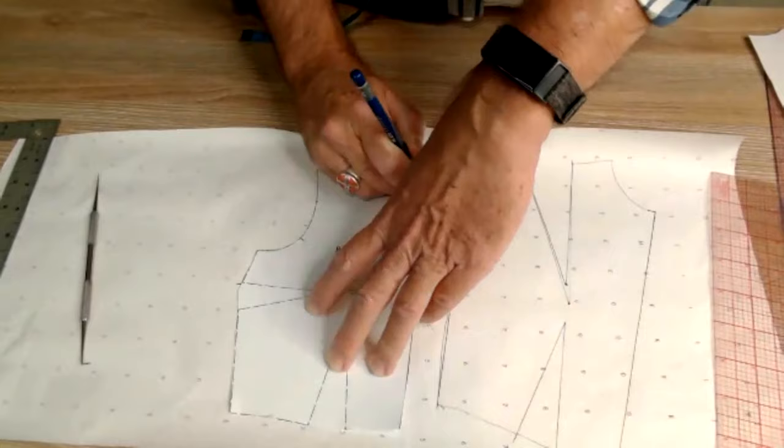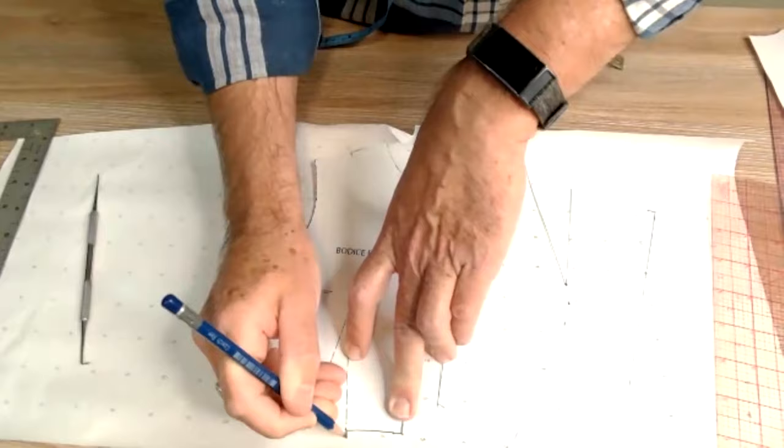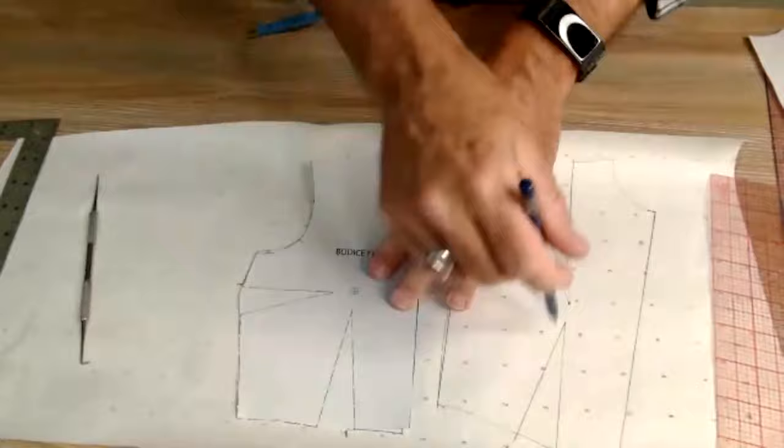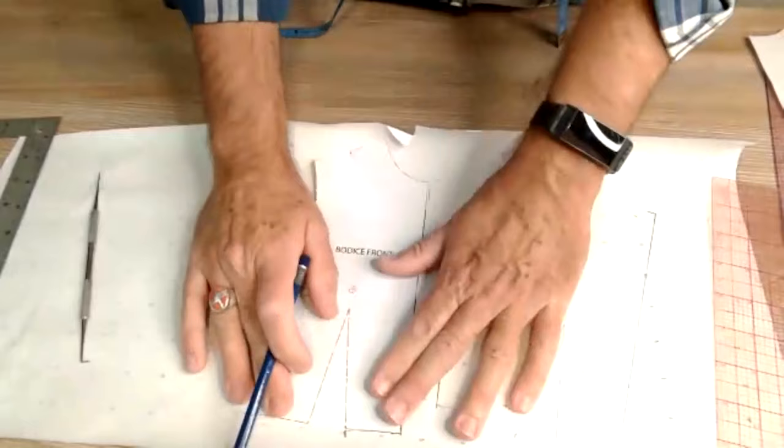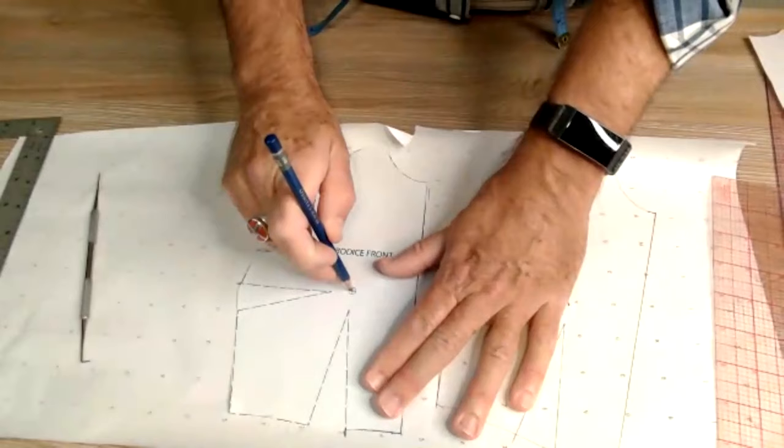There's my right angle for my center front. Now we're coming over here and here's my outside dart leg. So I went from the outside dart leg here all the way around until I hit the outside of my dart leg here.